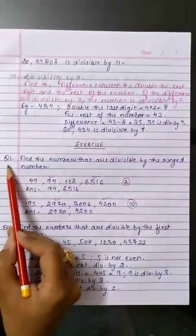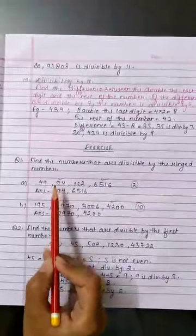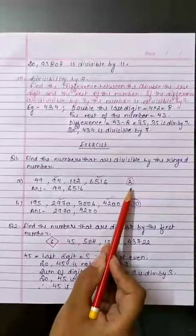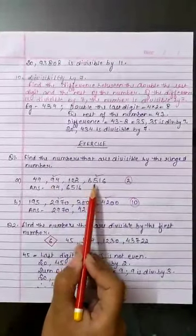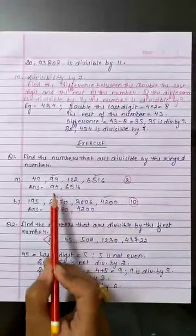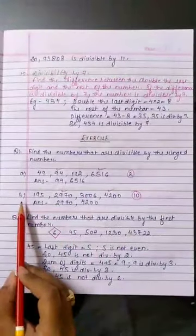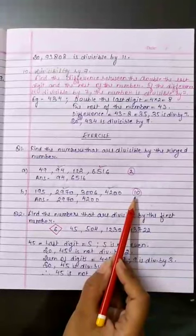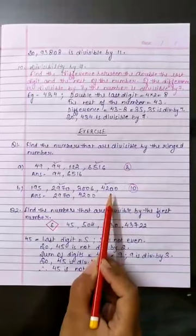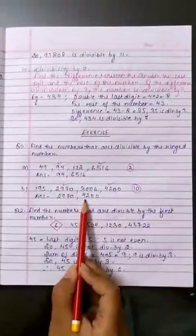Exercise, Question 1. Find the numbers that are divisible by the ringed number. For divisibility by 2, 94 and 6516 have even digits at the ones place, so the answer is 94 and 6516. For part B, checking divisibility by 10, the numbers 2970 and 4200 have 0 at their ones place, so the answer is 2970 and 4200.